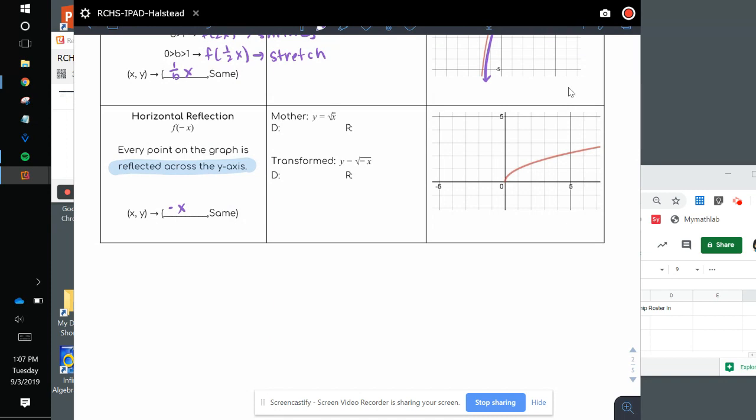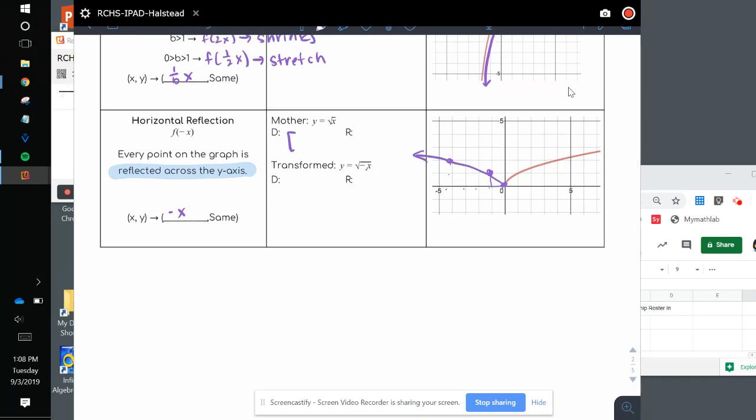Last one. The square root of x and y equals the square root of negative x. When the negative is on the inside, it reflects the x values. Instead of positive 1, 1, we move to negative 1, 1. Instead of 4, 2, we get negative 4, 2. Our new graph looks like this. Our domain was 0 to infinity, range was 0 to infinity.